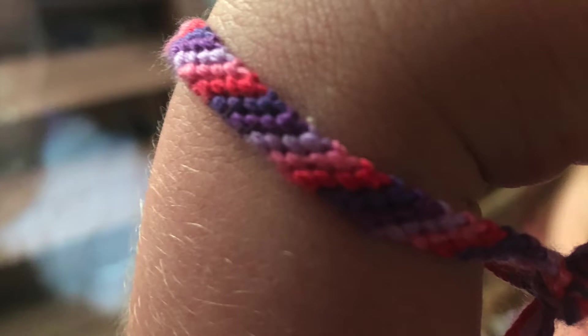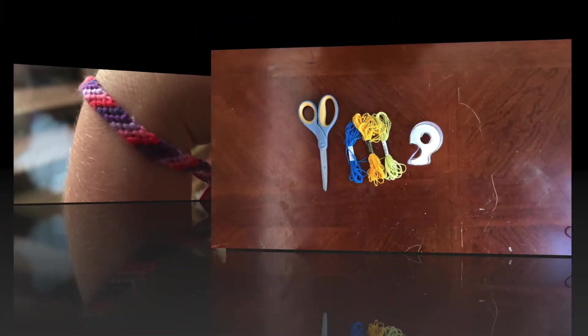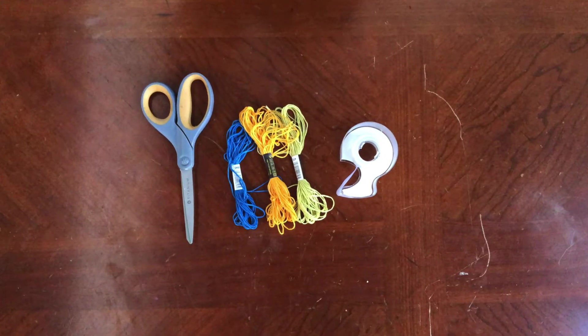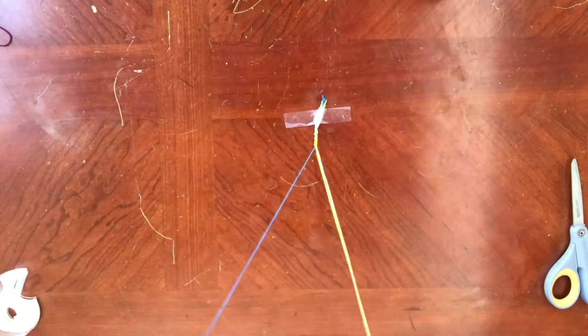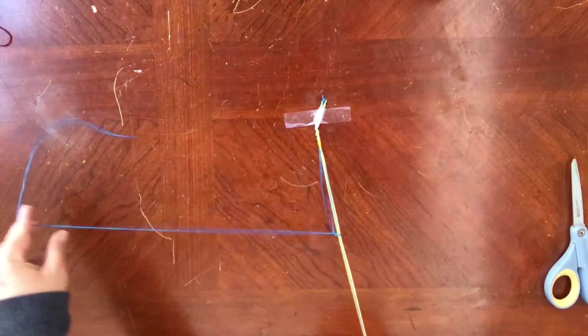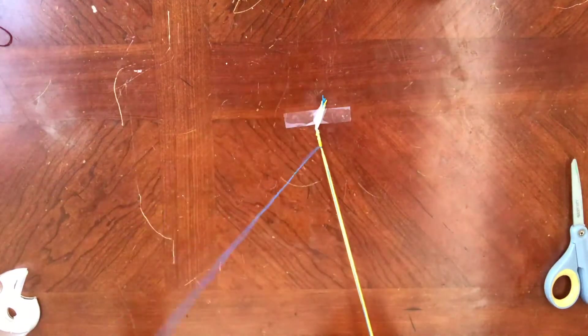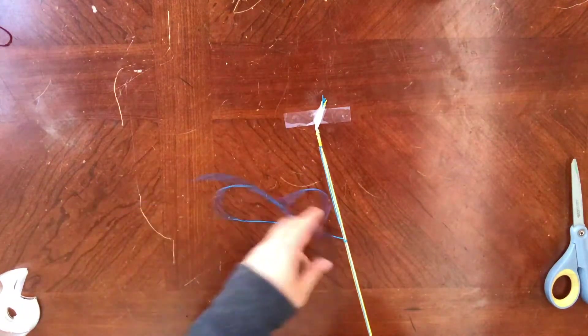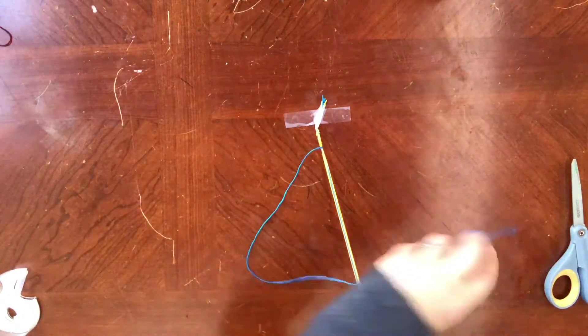I'm going to show you now the second version of doing this bracelet, which is a lot more simple. Again for this project you're going to need scissors, string, and tape. Just like the other video, you're going to cut your string into equal lengths. This time I cut two colors of each because I wanted it to be thicker.